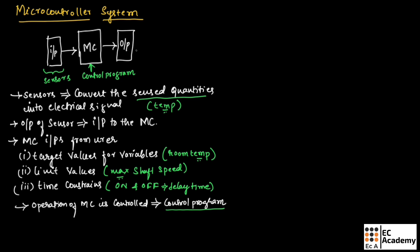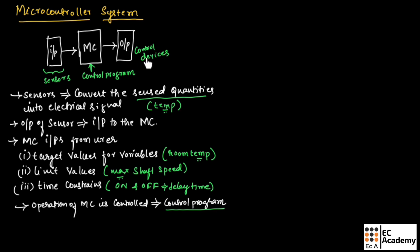At the output, we will have control devices. This control program will continuously monitor the input signal provided by the sensor, as well as user settings and time of input data, before making changes to the output sent to one or more control devices. These control devices produce control quantities in response to the output from the microcontroller.